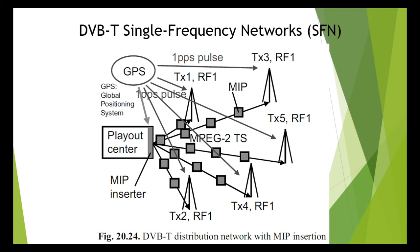Among other things, the MIP contains a time count back to the time the last 1 PPS pulse was received at the MIP inserter. This timestamp with a resolution of 100 nanosecond steps is used for automatically measuring the feed line distance. This time information is evaluated by the SFN adapter.